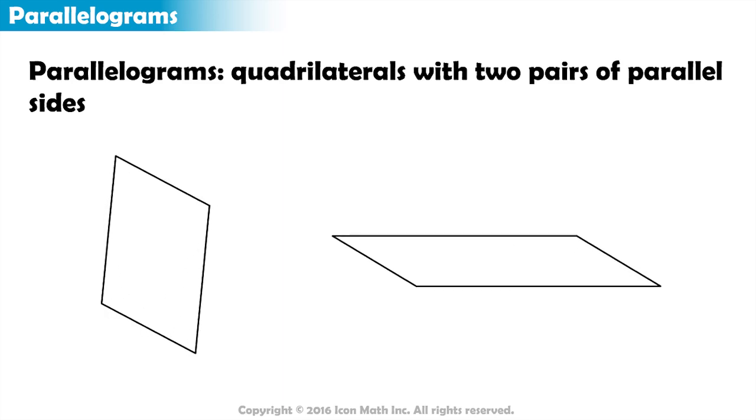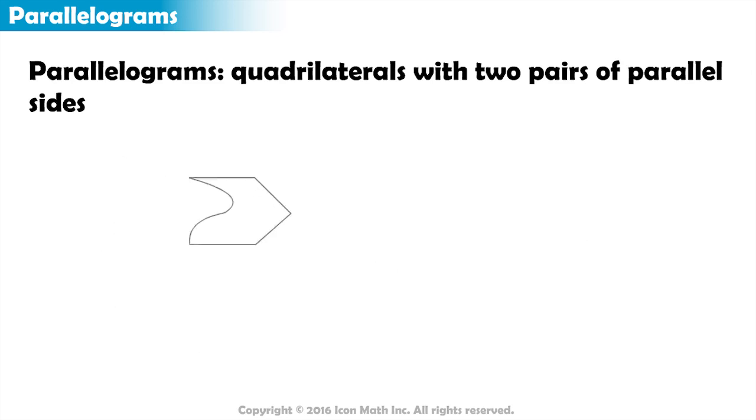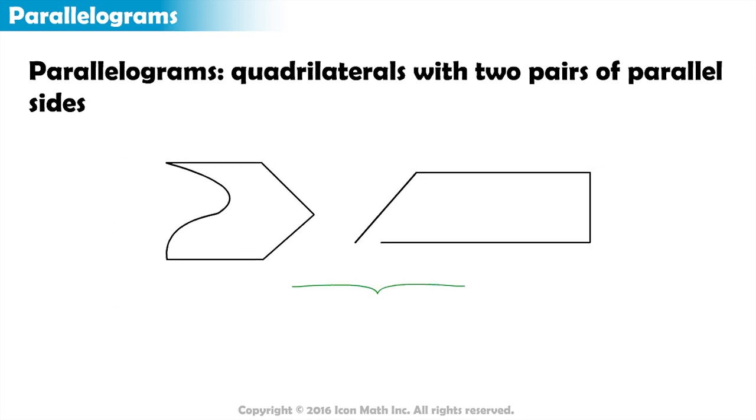These shapes are all parallelograms because they are made up of one closed path. They have four sides and two pairs of parallel sides, while these ones are not because they are not polygons, as you can see.